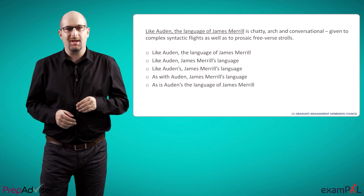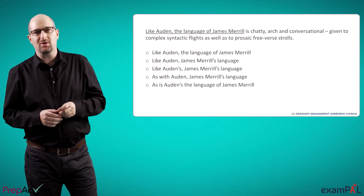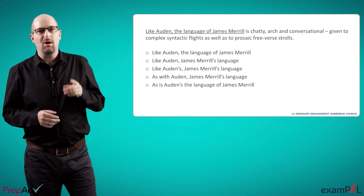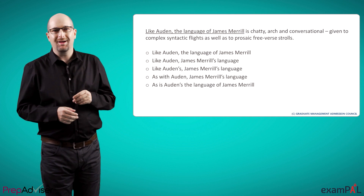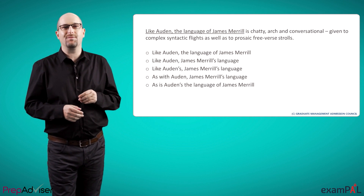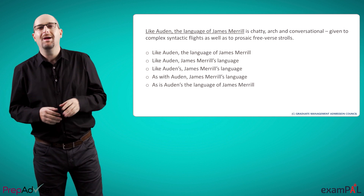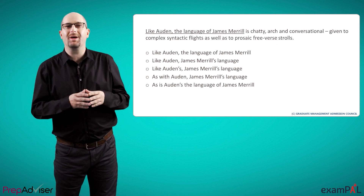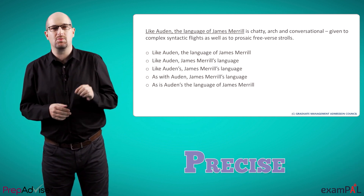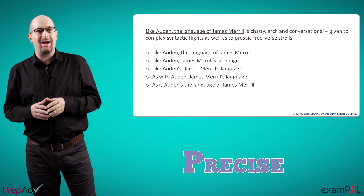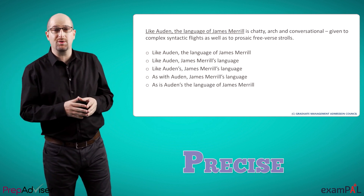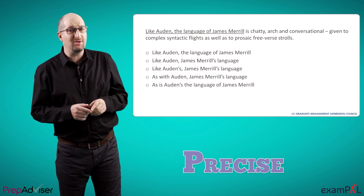How else can we solve them then? Let's see another example from the official test. 'Like Auden, the language of James Merrill is chatty, arch, and conversational, given to complex syntactic flights as well as prosaic free-verse strolls.' This question can be quickly solved in a precise way, since we can figure out what is wrong with the original sentence just by looking at it.